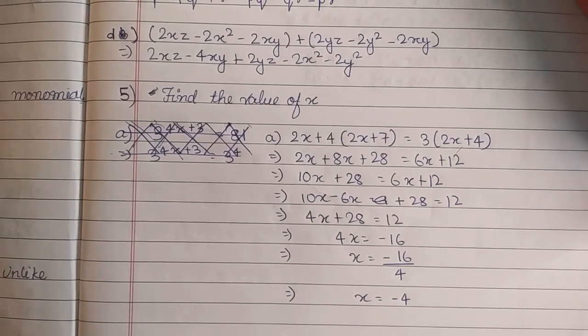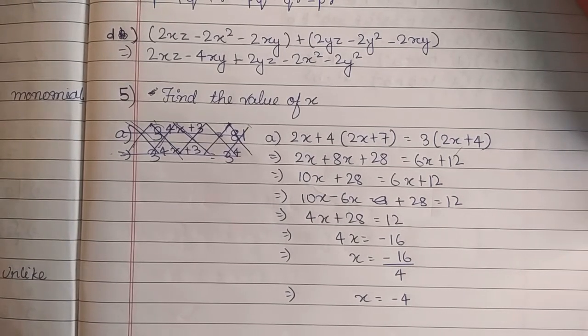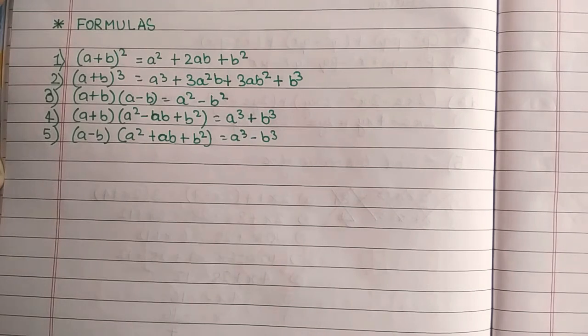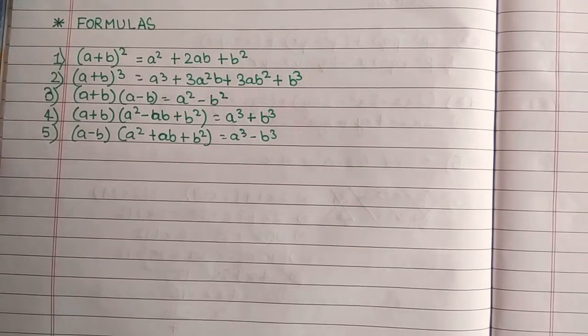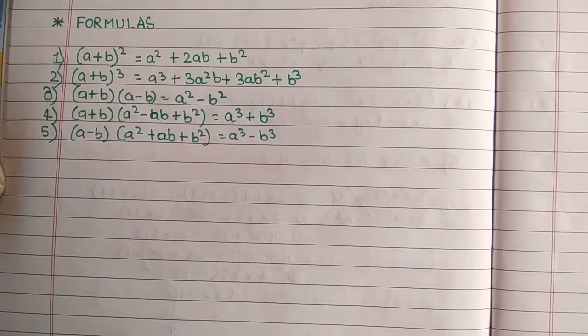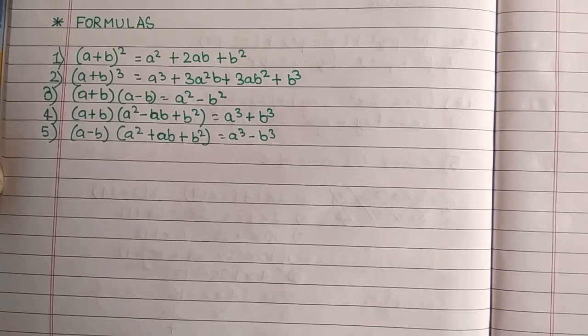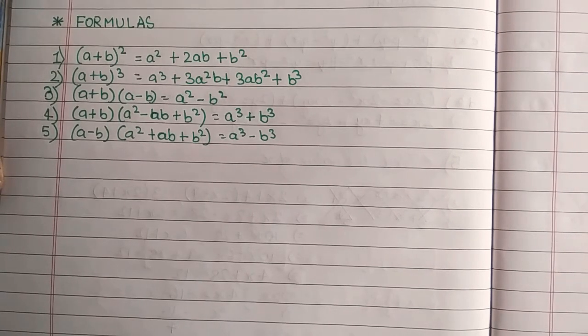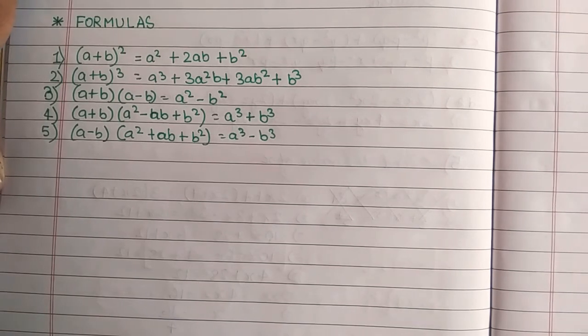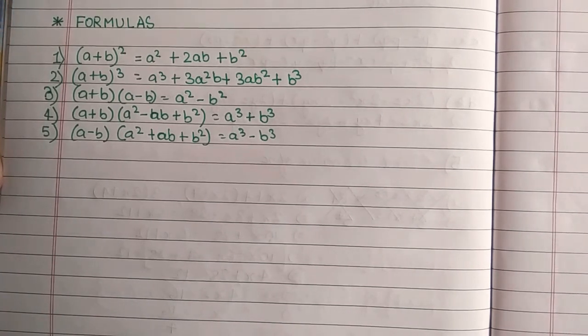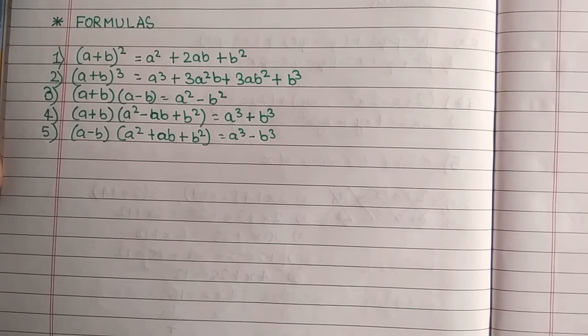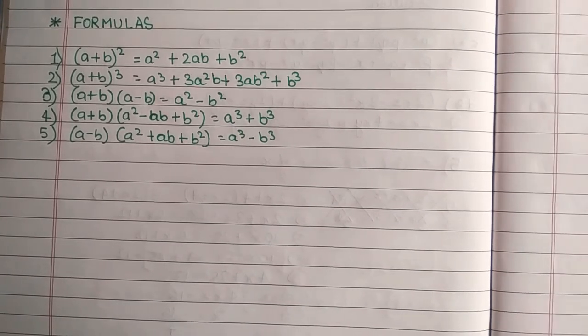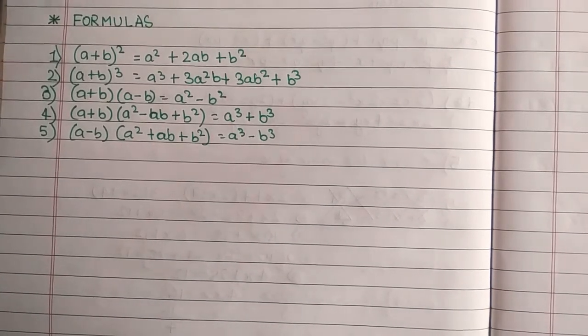So let's come to the last topic of the algebra which is formulas. Now the first formula is (a + b)² which is a² + 2ab + b². Second is (a + b)³: a³ + 3a²b + 3ab² + b³. (a + b)(a - b) is equal to a² - b². a³ + b³ is equal to (a + b)(a² - ab + b²). And a³ - b³ is equal to (a - b)(a² + ab + b²).